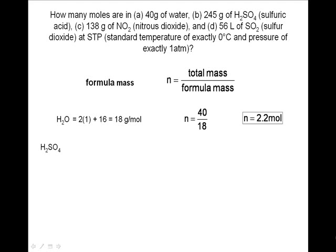Next, we will find the number of moles in 245 grams of H2SO4, sulfuric acid. Sulfuric acid has two hydrogens at one gram, one sulfur, which has a mass of 32 grams, and four oxygens with a mass of 16 grams. We then divide the total mass by the molecular mass, and find that there are 2.5 moles present.